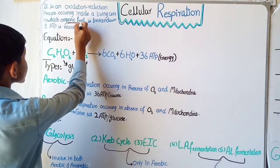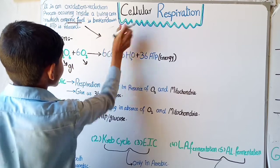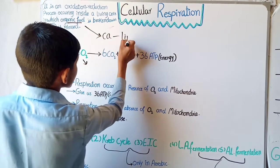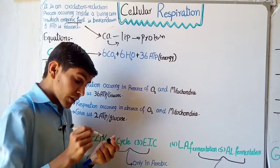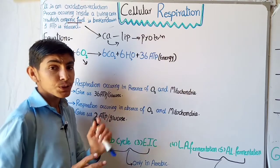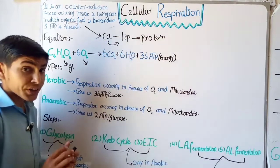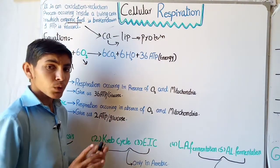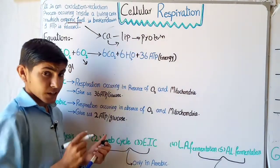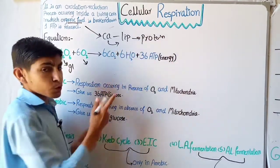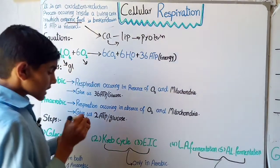Now if we talk about organic food, organic food has several types: carbohydrates, lipids, and proteins — all are organic compounds. The most important is carbohydrate. When food enters our body and is absorbed into the bloodstream and carried to every cell, the cell first breaks down carbohydrates into simpler substances to produce ATP. When the carbohydrate source is finished, the cell uses lipids, and when lipids are finished, it uses protein.